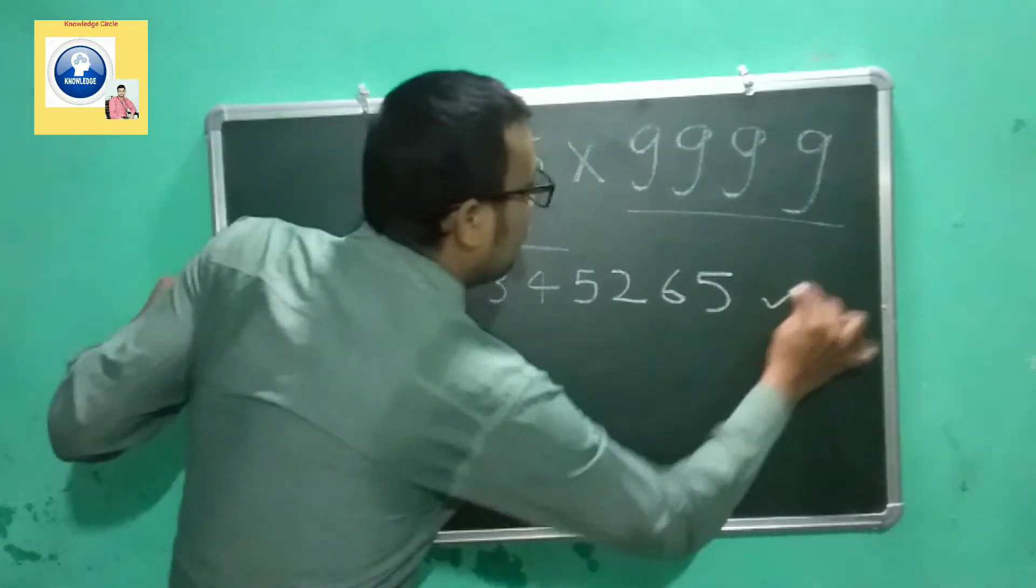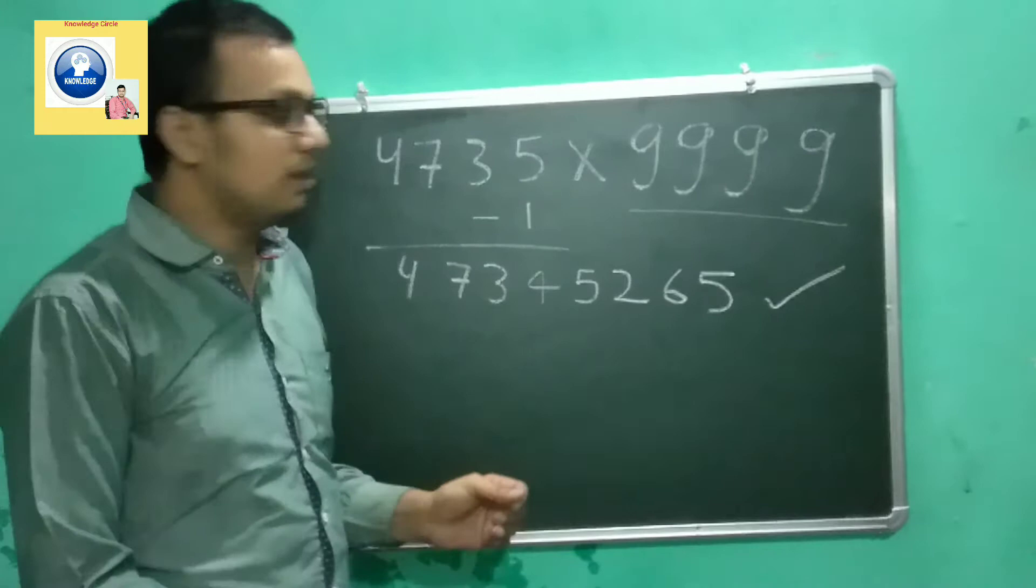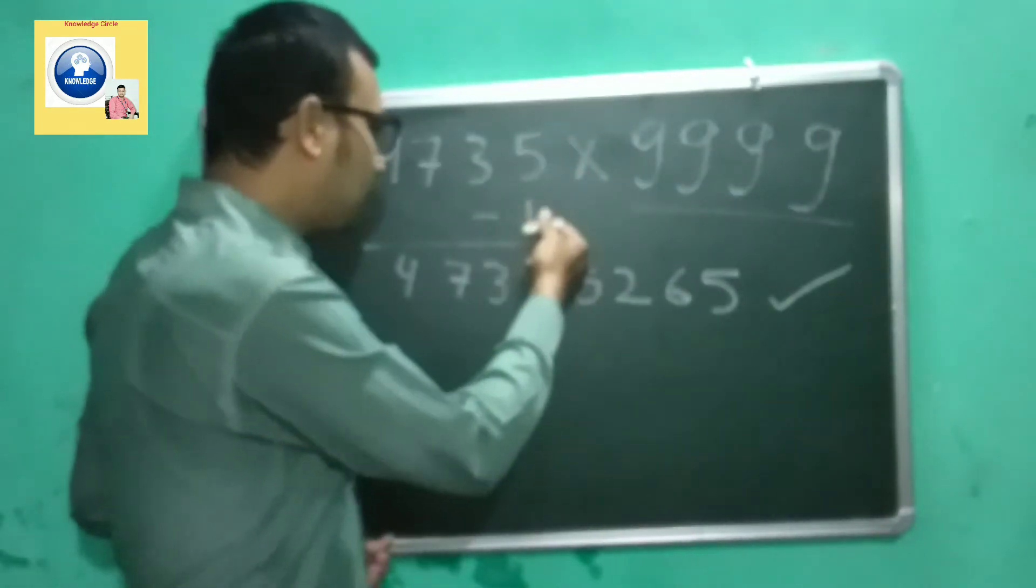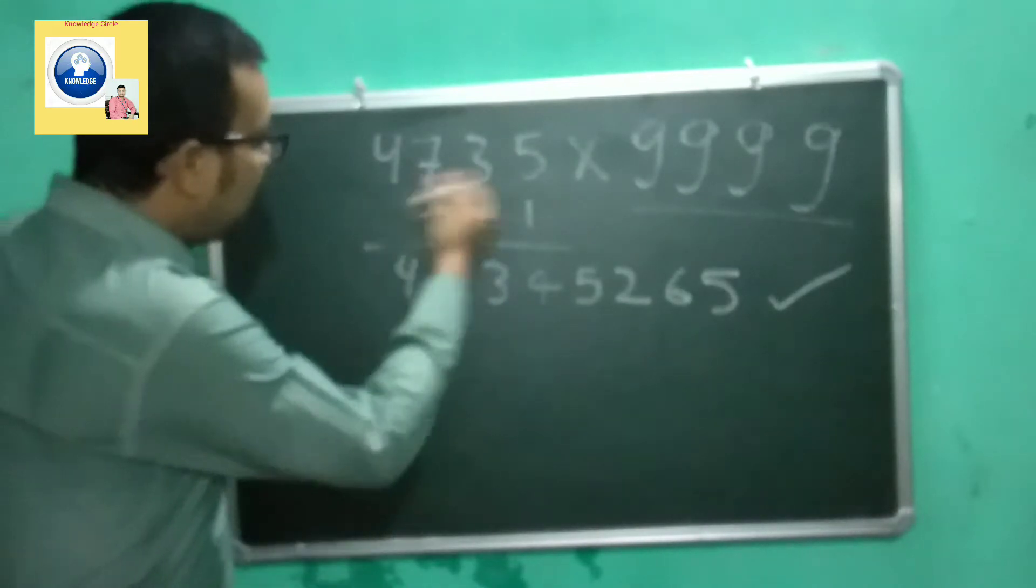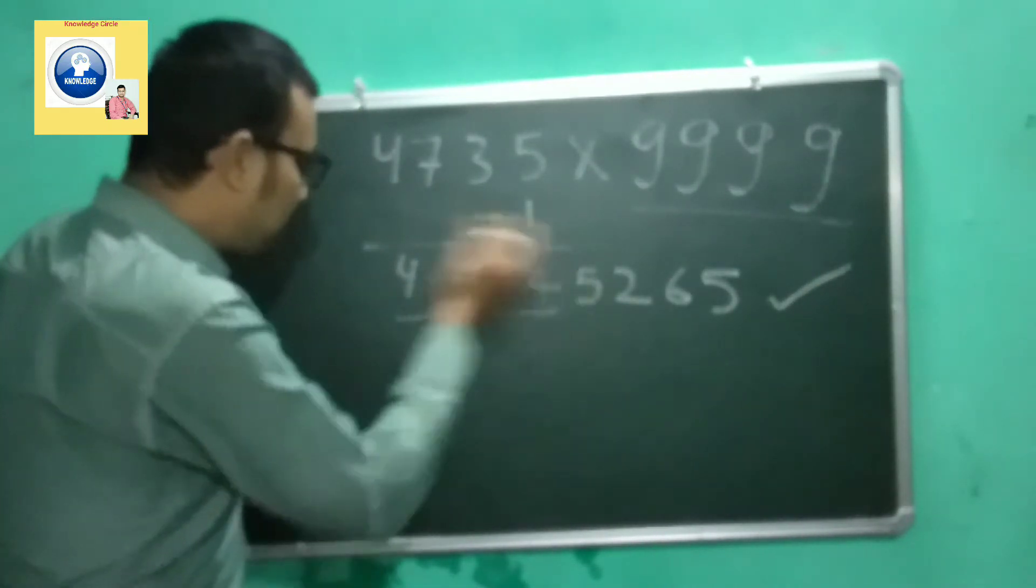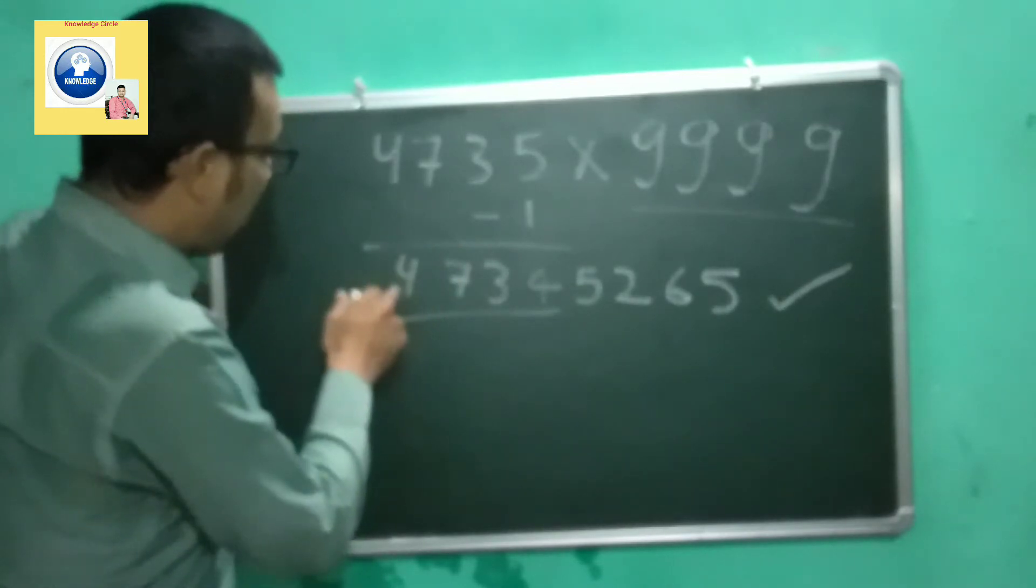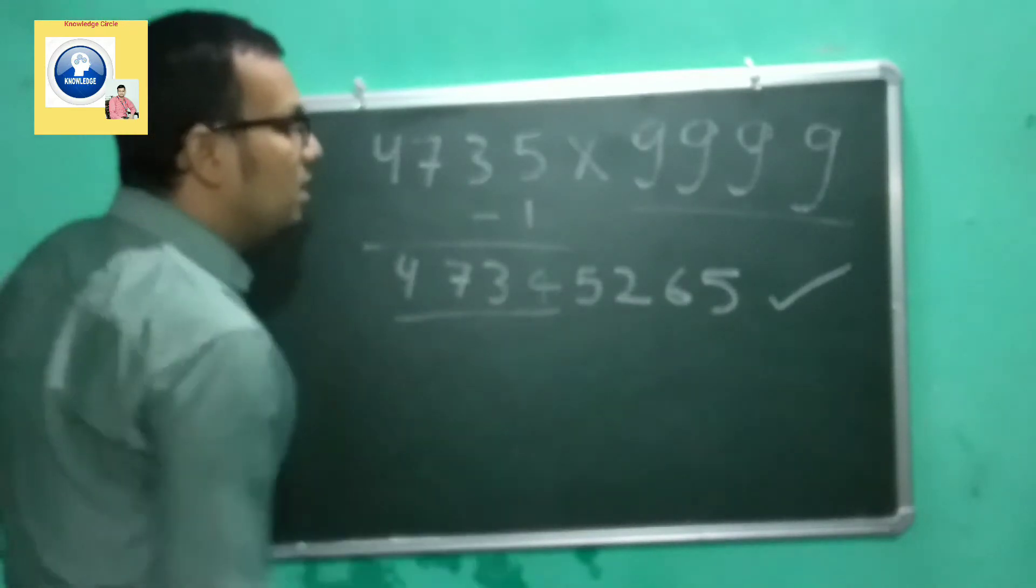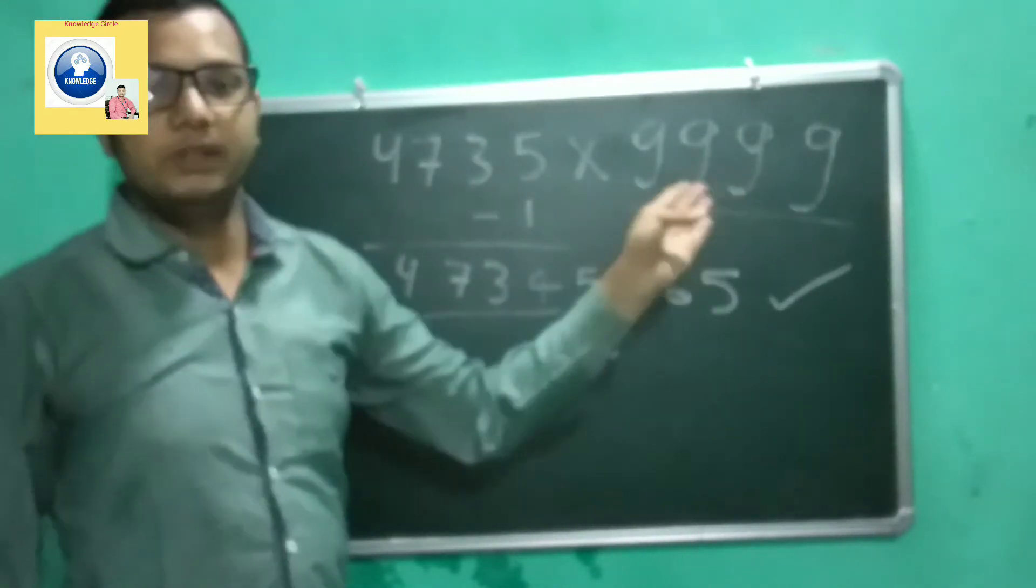So this is the shortcut method. What you need to do is first subtract 1 and write the number you've got, then subtract each digit from 9. Whatever is the answer, put it at the right side of the number and your answer will be correct. Within a few seconds you'll be able to find it out.